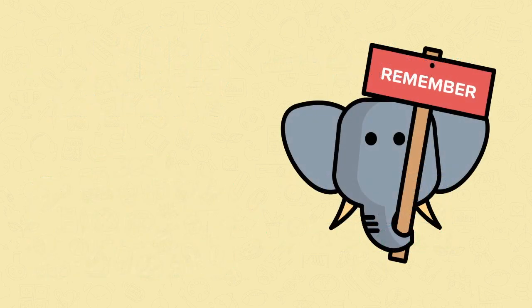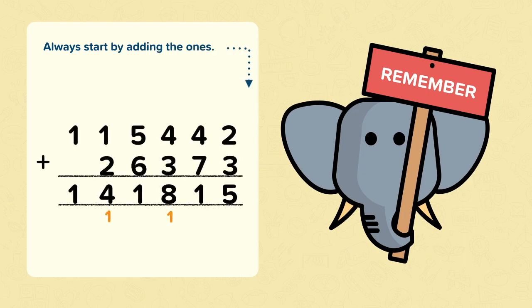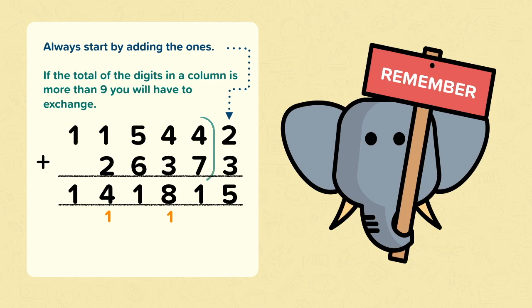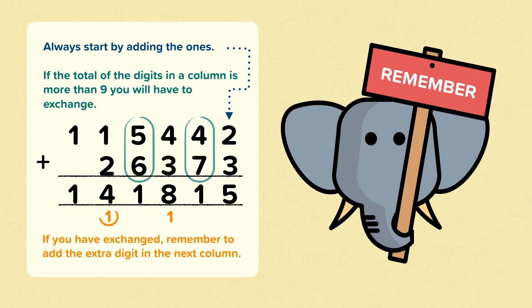So remember, when you're using the column method for addition, always start by adding the ones. If the total of the digits in a column is more than nine, you will have to exchange. And if you have exchanged, remember to add the extra digit in the next column. I'll see you next time. You're awesome.